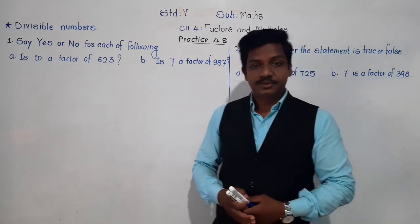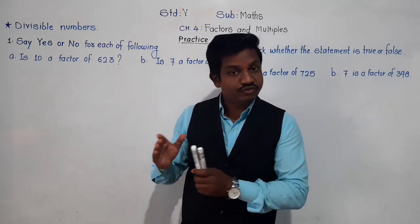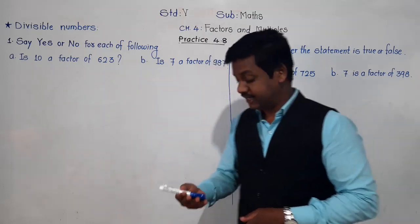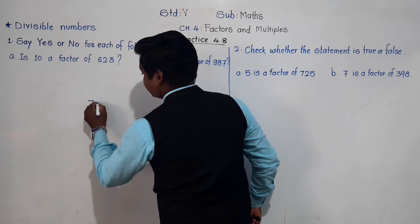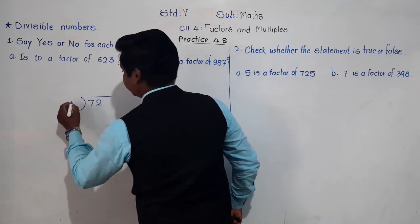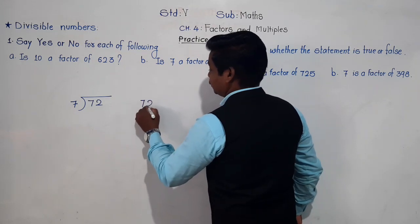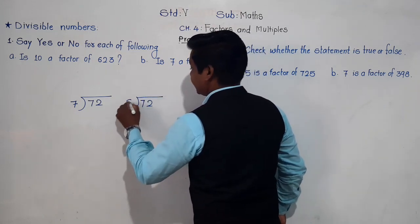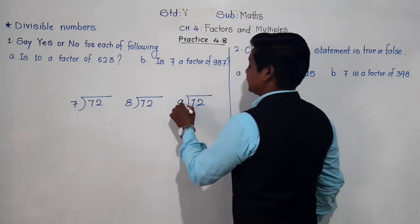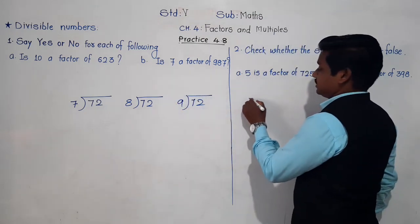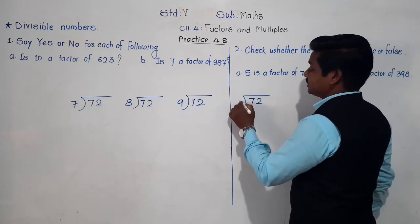In the previous chapter, we have learnt the process of division — the operation of division and how to do it. For example, we will take some examples here: 72 divided by 7, 72 divided by 8, 72 divided by 9, and 72 divided by 6.